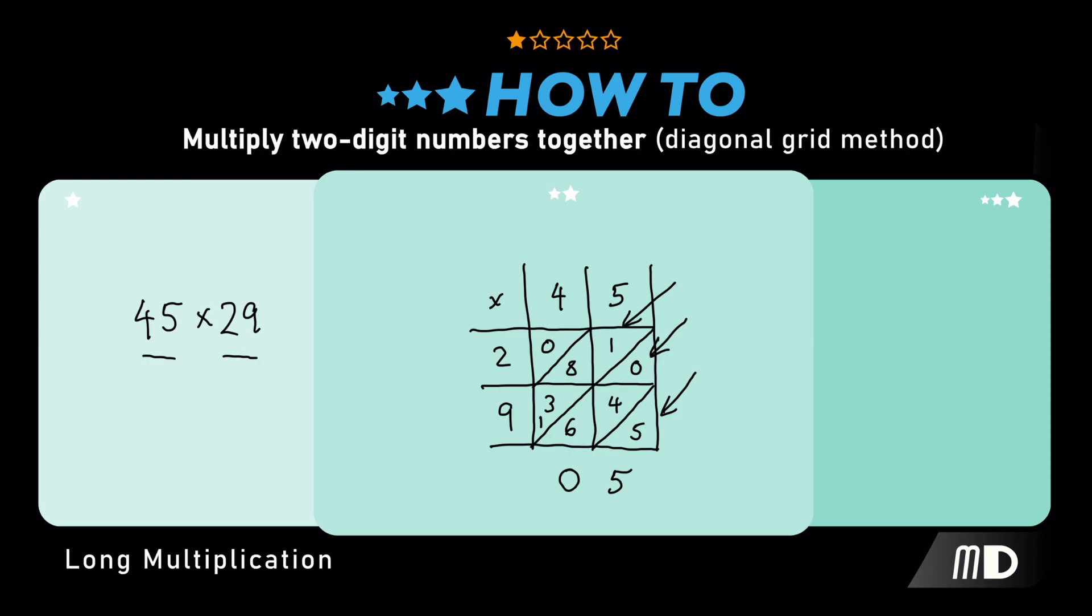Now, we've got a 1, an 8, a 3, and a 1. If you add those up, you get 13. So, the 3 goes down, and the 1 gets carried to the last diagonal.